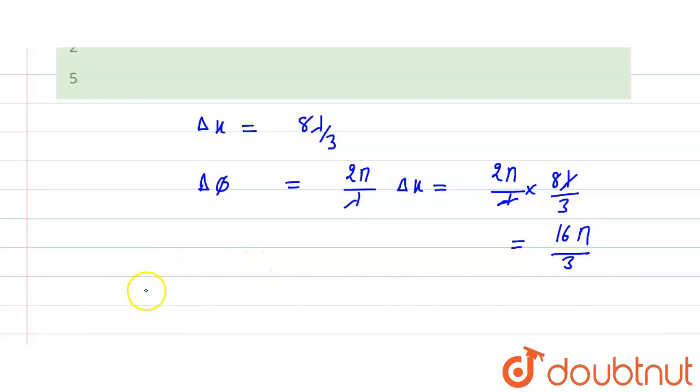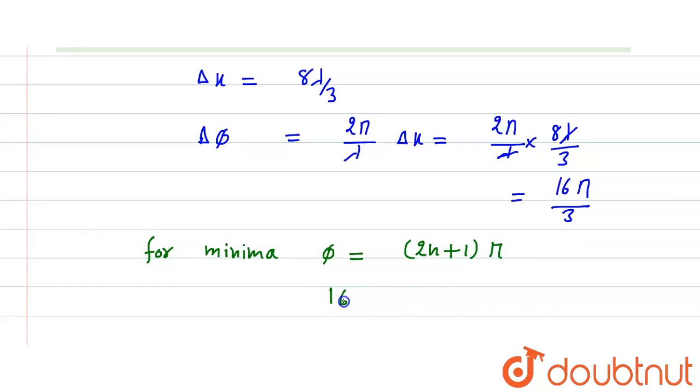And here we know that for minima, φ is equal to (2n+1)π. And φ value is 16π/3, which is equal to (2n+1)π. Pi to pi cancel.